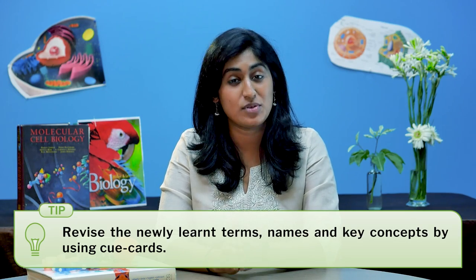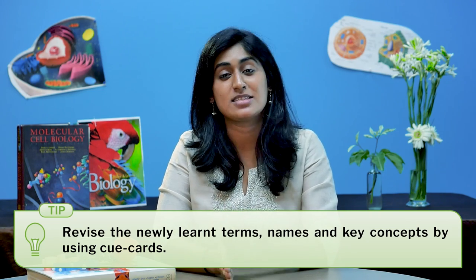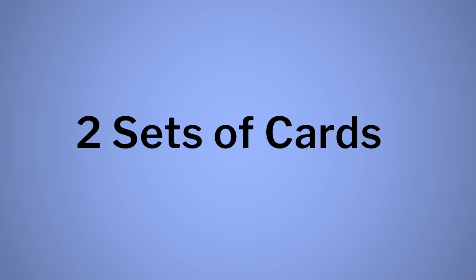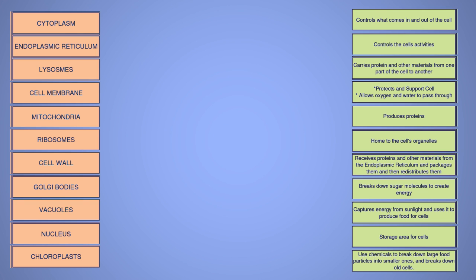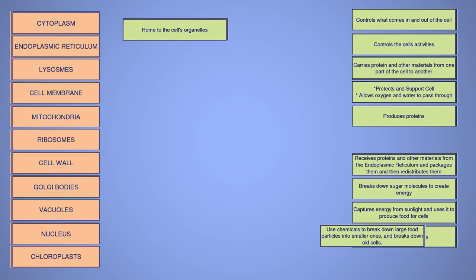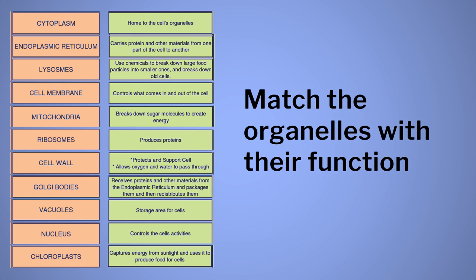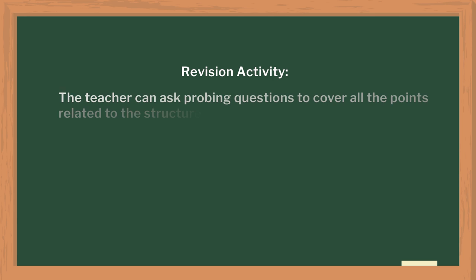Over these classes, a lot of students have come across many new key concepts and keywords, and it's very important for them to remember all of these. To do this during revision, I divided the class into groups. You can prepare two sets of cue cards — with cell organelle names or diagrams on one set and their functions on the other set. Randomly distribute the cue cards among the students. Students can take turns to match the cue cards having organelle functions with the cards having organelle names. The teacher can ask probing questions to cover all the points related to the structure and function of the cell organelles.